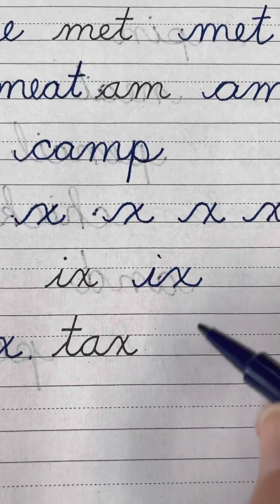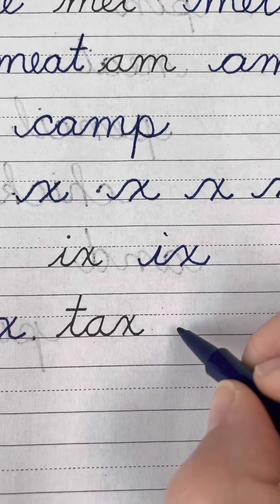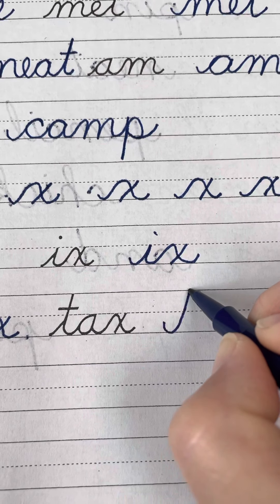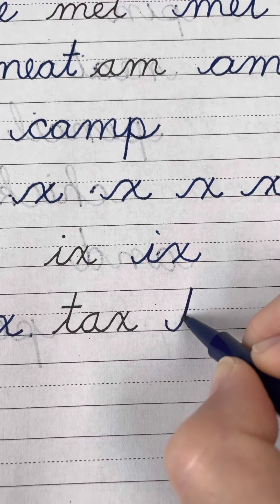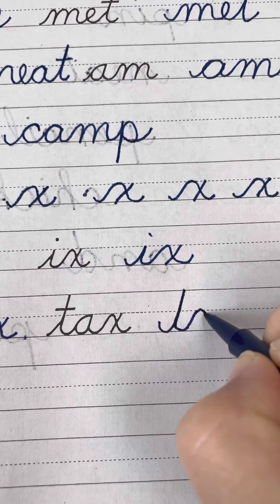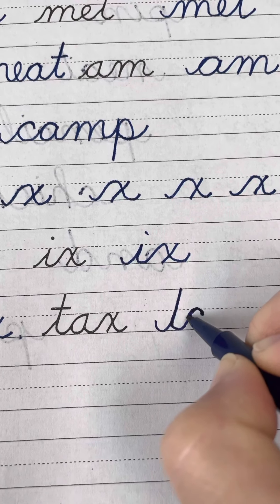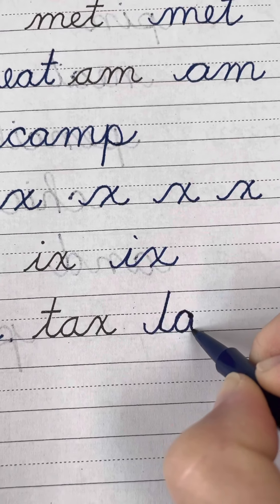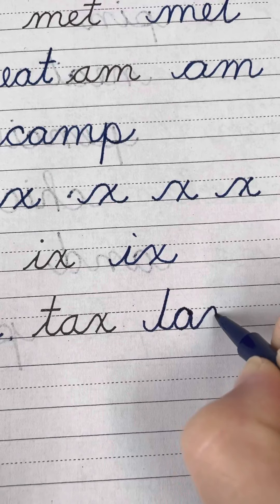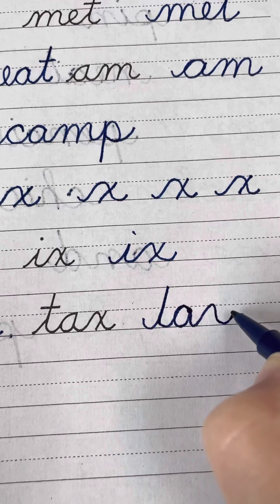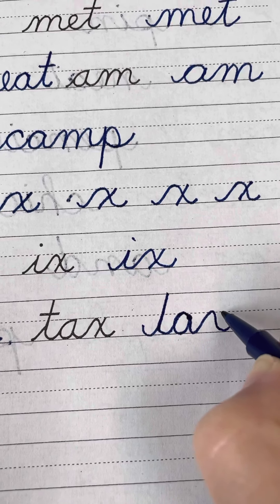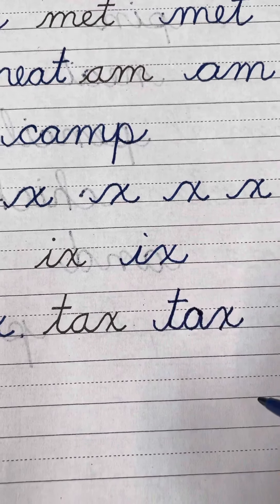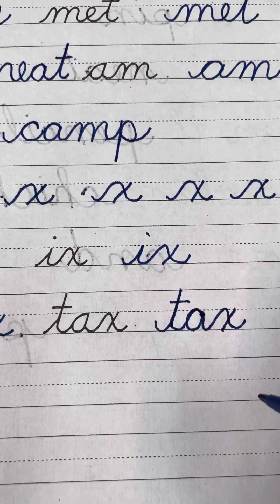The next word is tax. T, swoop, make sure you retrace down. A, retrace, and make your swoop, and then cross your X, and cross your T for tax.